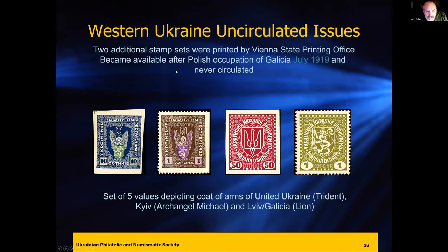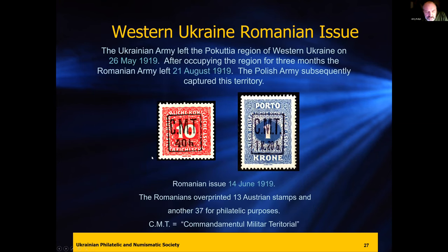By July 1919, after Poland took over most of Western Ukraine, the stamps that were printed were never issued. Some are quite rare and command quite a bit of money. They depict the Archangel Michael, patron saint of the capital Kyiv, and the lion for Western Ukraine/Lviv. There were also skirmishes on the south side with Romania. Some stamps were issued on prior Ukrainian territories but not all Ukrainian philatelists collect these — they're still quite collectible, in my opinion.